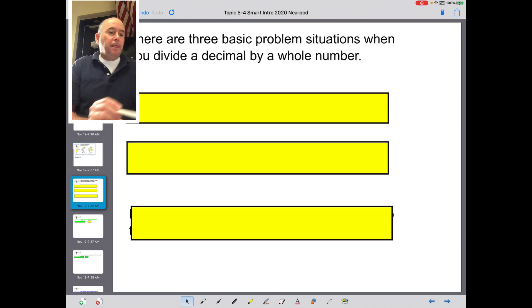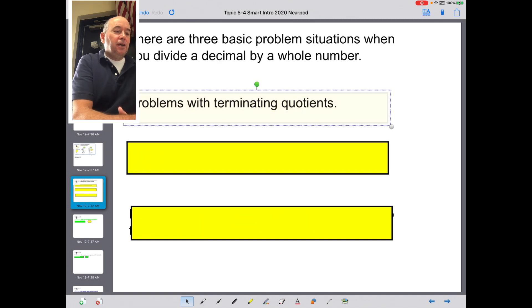There are three basic problem situations when you divide a decimal by a whole number. What does that mean? It means there's going to be three situations they got to deal with and make sense of. Because this is like math in the real world, and math is everywhere. So the first situation is problems with terminating quotients. That's a good situation, it ends.